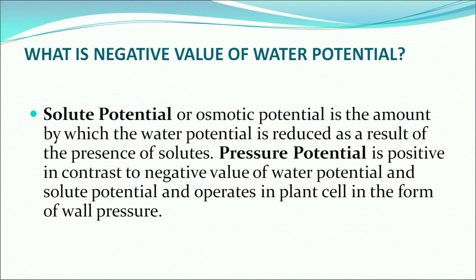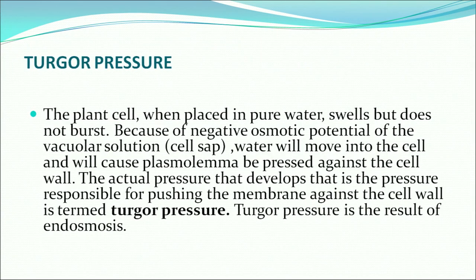Solute potential or osmotic potential is the amount by which the water potential is reduced as a result of the presence of solutes. Pressure potential is positive, in contrast to the negative value of water potential, and it operates in plant cells in the form of wall pressure. Turgor pressure: when a plant cell is placed in pure water it swells, but it does not burst because of the negative osmotic potential of the vacuolar solution — that is, the cell sap. Water moves into the cell and causes the plasma lemma to press against the cell wall, and the pressure responsible for pushing the membrane against the cell wall is called turgor pressure.